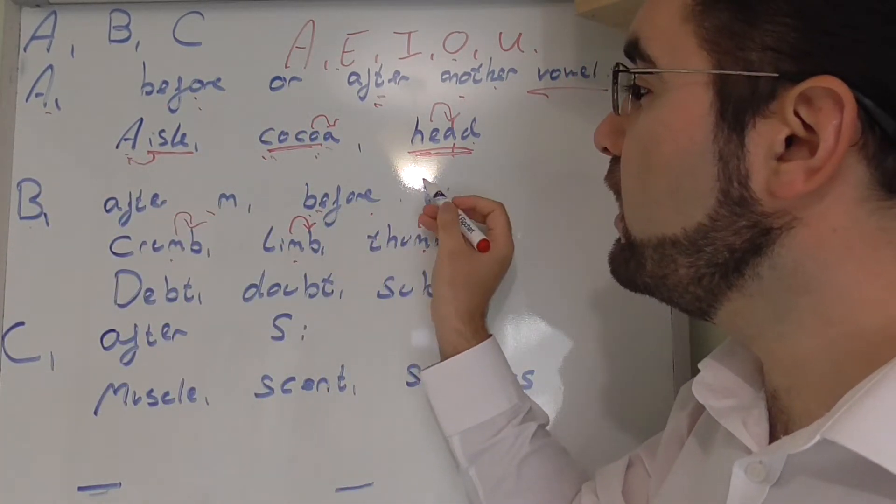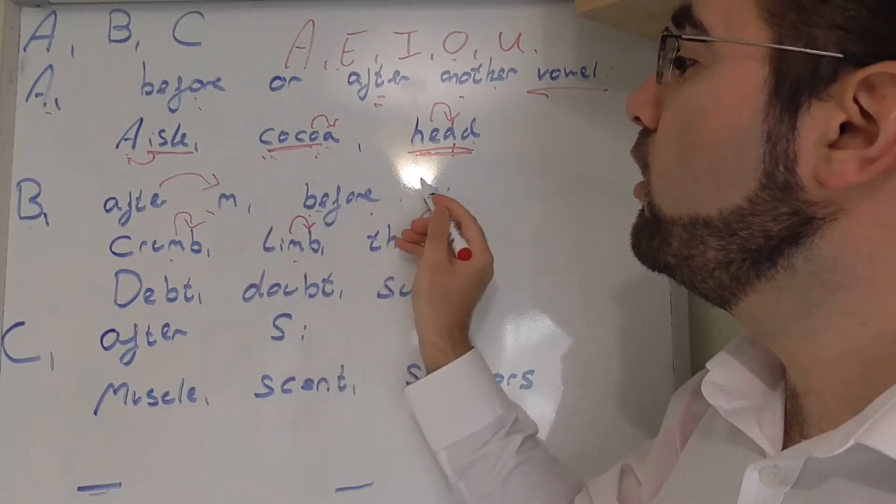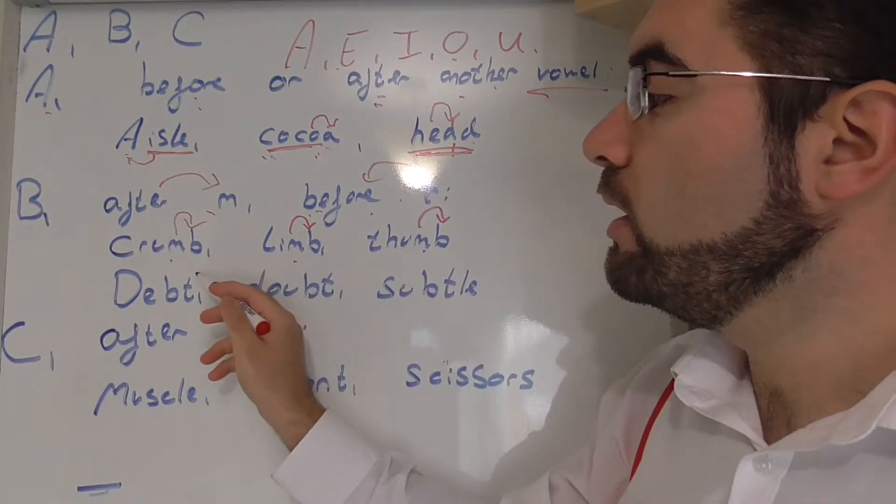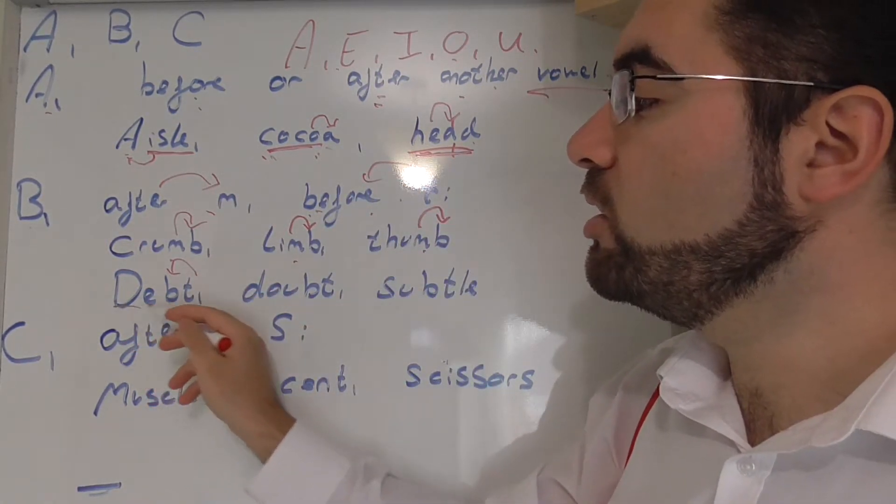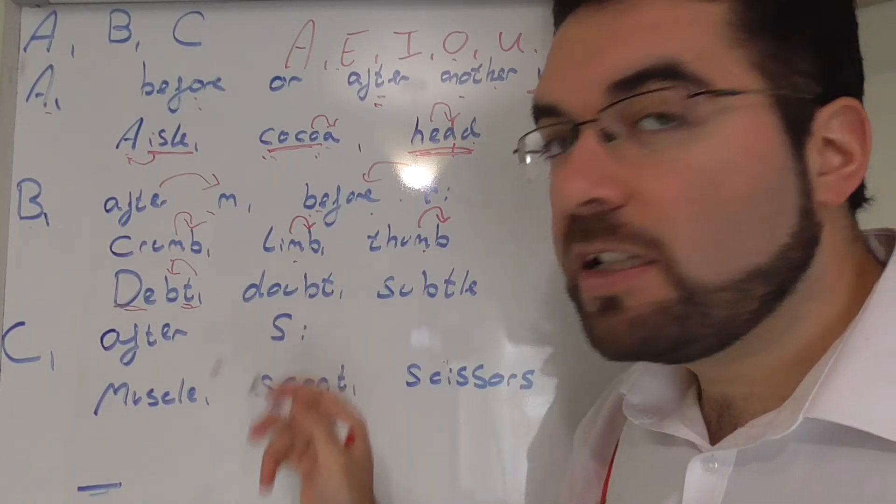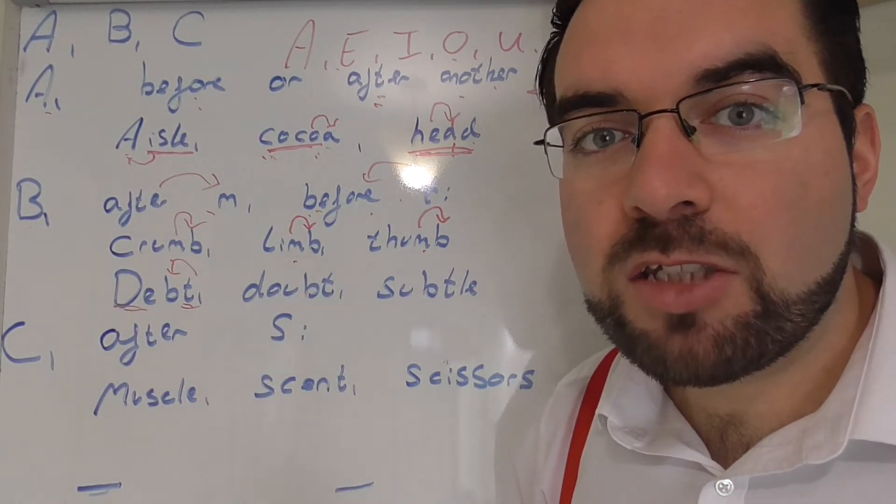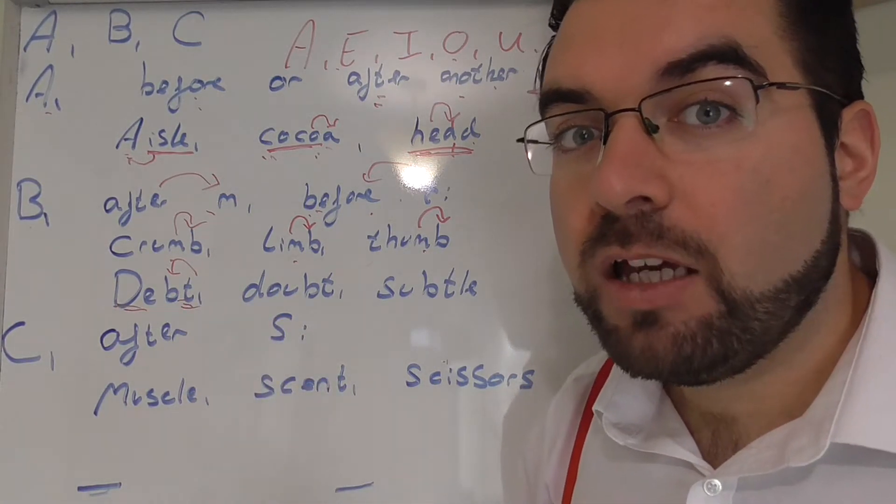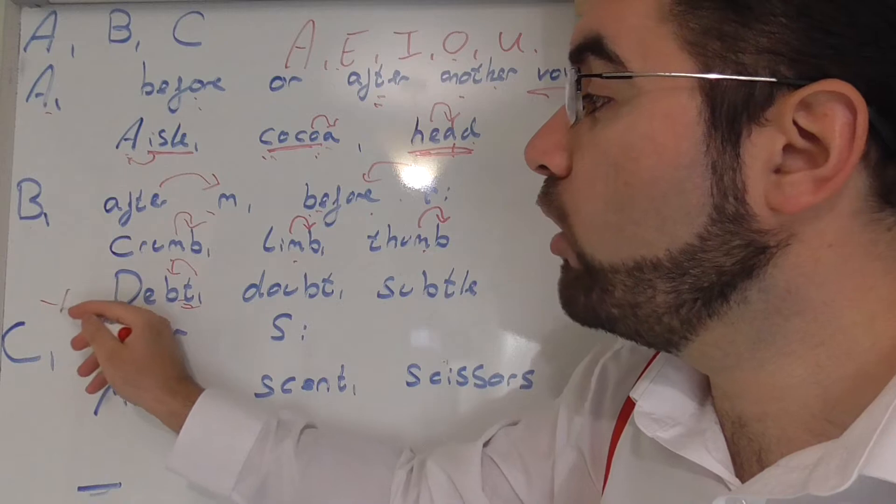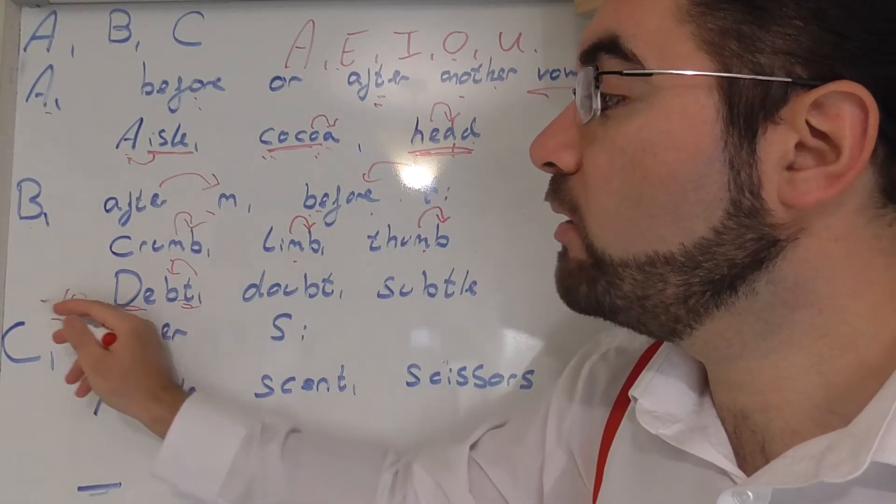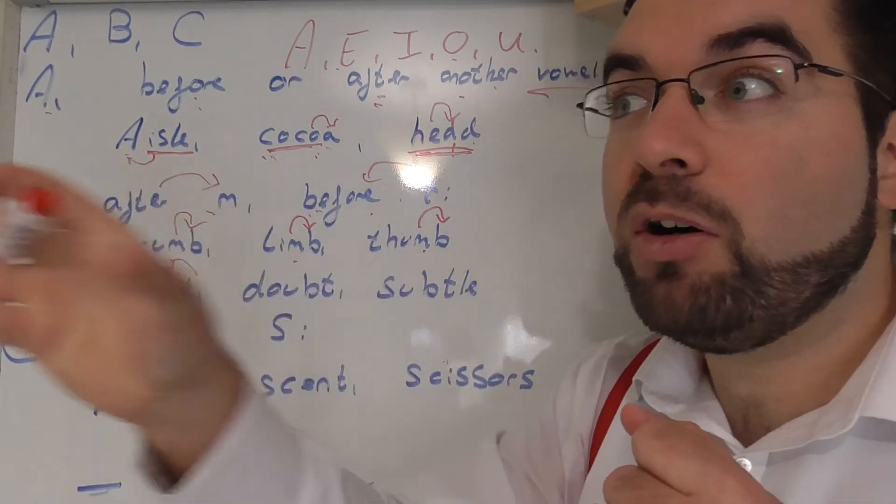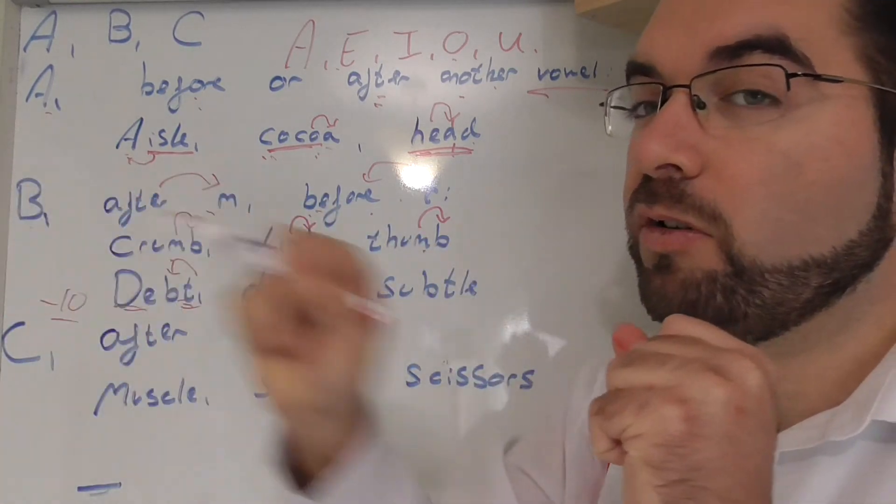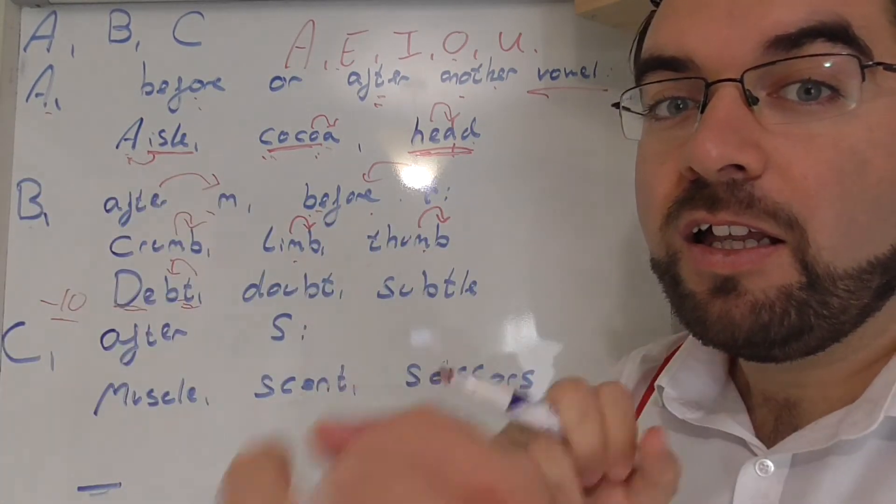Or before the T. So, we have after M, before the T. So, debt. Before the T. Debt. Not debbt. Debt. Before the T. I mean, I haven't got enough money. I'm running out of money. I need more money. I need to borrow more. Borrow a hundred. Borrow a thousand. Borrow ten thousand. Let me borrow more.